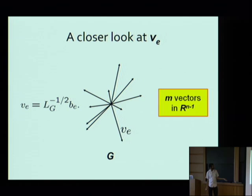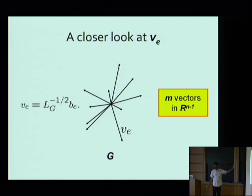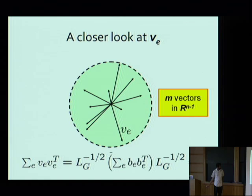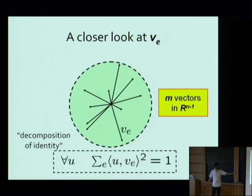The V_e's are m vectors in R^{n-1} — one for each edge, in R^{n-1} because they're in the image of L_G^{-1/2}, which has rank n-1. The crucial property of these V_e's is that they form a decomposition of the identity: the sum of projections onto the V_e's equals the identity by definition. For any unit vector U, the sum of squared projections of U onto my vectors V_e equals 1 — I look in any direction and get total projection 1.